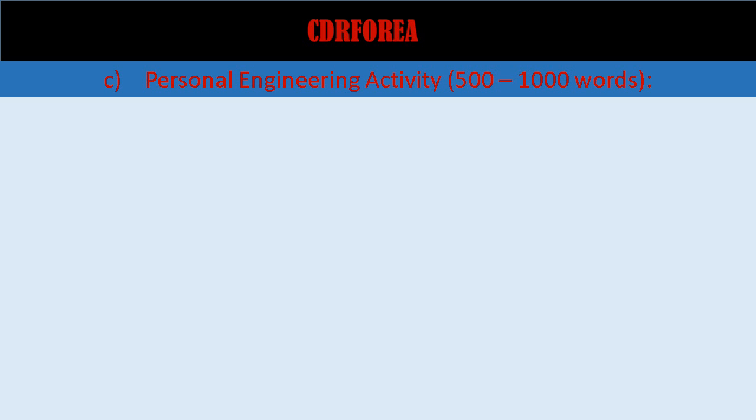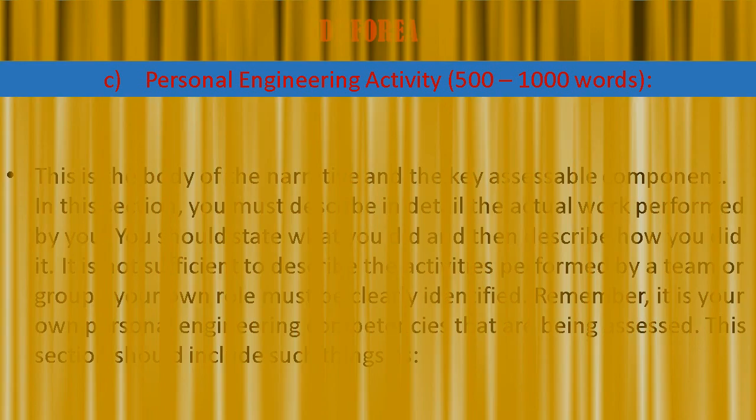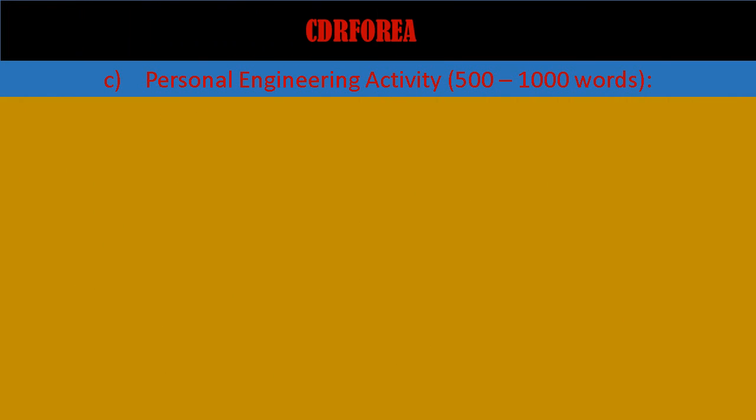Personal engineering activity (500 to 1000 words): this is the body of the narrative and the key assessable component. In this section, you must describe in detail the actual work performed by you. You should state what you did and then describe how you did it. It is not sufficient to describe the activities performed by a team or group — your own role must be clearly identified. Remember, it is your own personal engineering competencies that are being assessed.